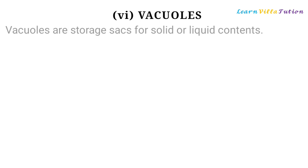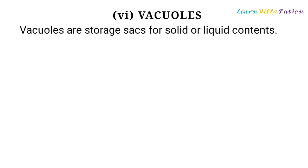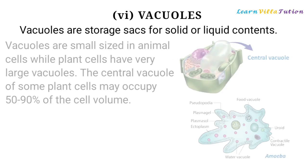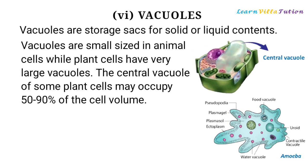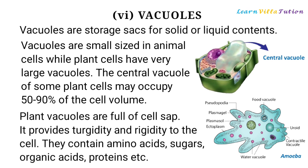Vacuoles are storage sacs for solid or liquid contents. Vacuoles are small-sized in animal cells, while plant cells have very large vacuoles. The central vacuole of some plant cells may occupy 50–90% of the cell volume. Plant vacuoles are full of cell sap and provide turgidity and rigidity to the cell.